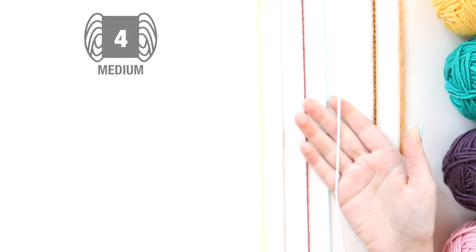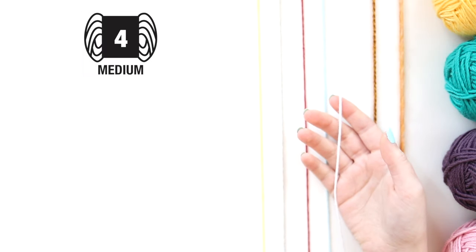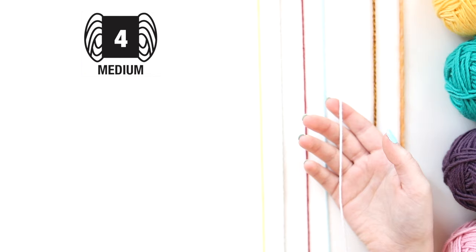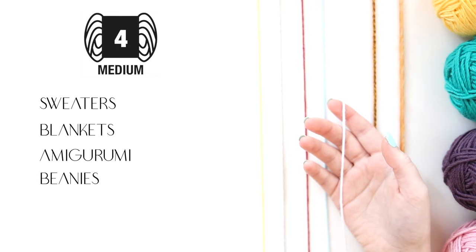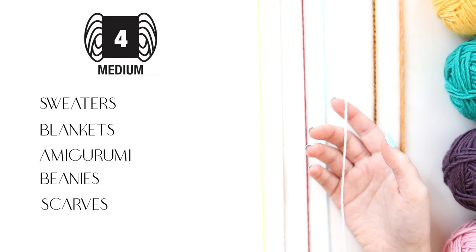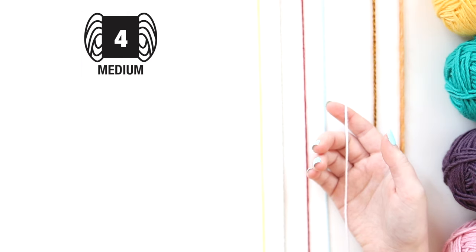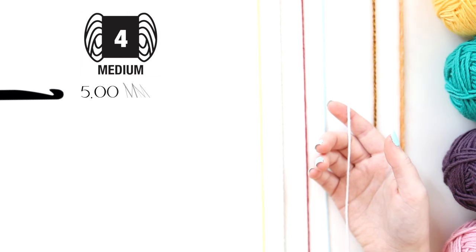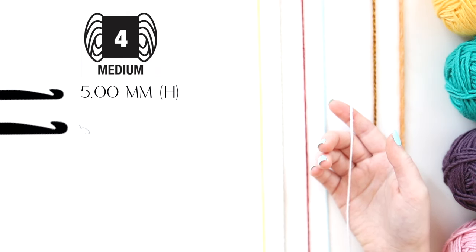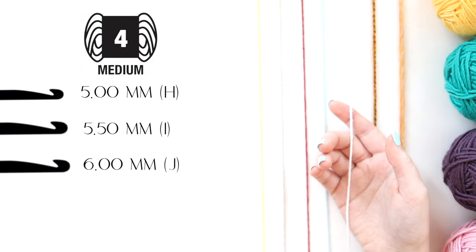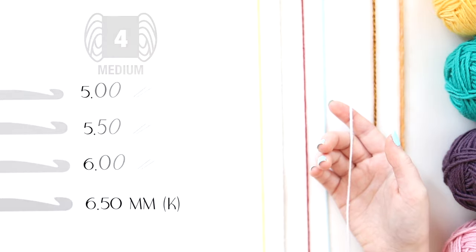Now, we have a weight four yarn, also known as worsted weight or aran yarn. This is probably the most common and popular of yarn weights and the one you're going to find the most of when you're looking around. It's often used for sweaters, blankets, amigurumi, beanies, scarves, just about anything you can think of you can make with a worsted weight yarn. The general recommended hook sizes are a 5mm hook, a 5.5mm hook, a 6mm hook, and a 6.5mm hook.